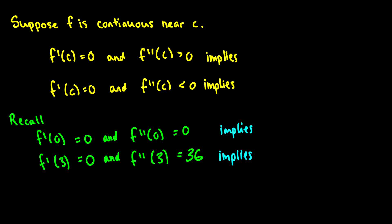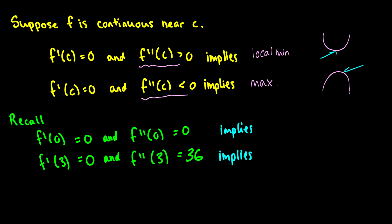Here's the second derivative test. We suppose that f is continuous near c. If the critical point has f prime of c equal to zero and the second derivative is greater than zero, then there is a local minimum at that point. If the second derivative is less than zero, it is going to have a local maximum. A concave up curve corresponds to a happy face — a local minimum — and a concave down curve is a sad face — a local maximum.